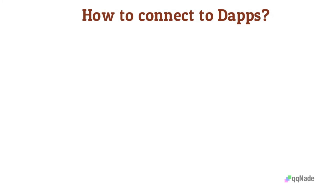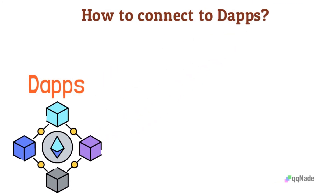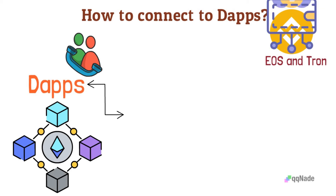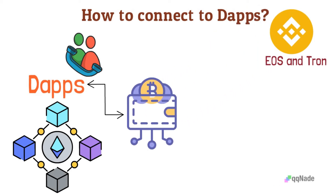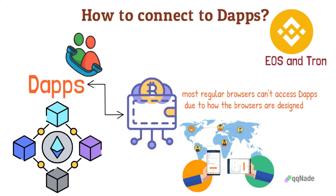How do you use a dApp? First, you need to remember that most dApps are built on a blockchain, usually the Ethereum blockchain, because Ethereum pioneered smart contract technology. There are also dApps on Binance Smart Chain, EOS, and Tron. To connect with a dApp, you'll need a crypto wallet — either on your phone or a mobile crypto wallet. You'll also need a dApp browser to browse through different decentralized apps. Most regular browsers can't access dApps due to how they are designed and would need a MetaMask extension.